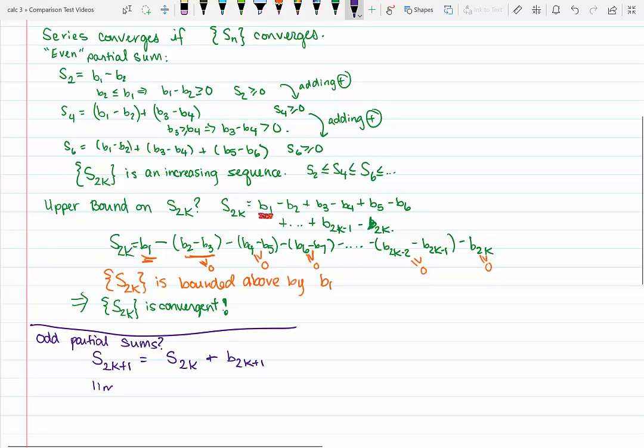Therefore, the limit as k goes to infinity of an odd partial sum, if it exists, would have to be equal to the limit of S sub 2k, which we know has a limit because of the fact that we said it was convergent, plus limit as k goes to infinity of B sub 2k plus 1. So the kth odd term in the Bk sequence.